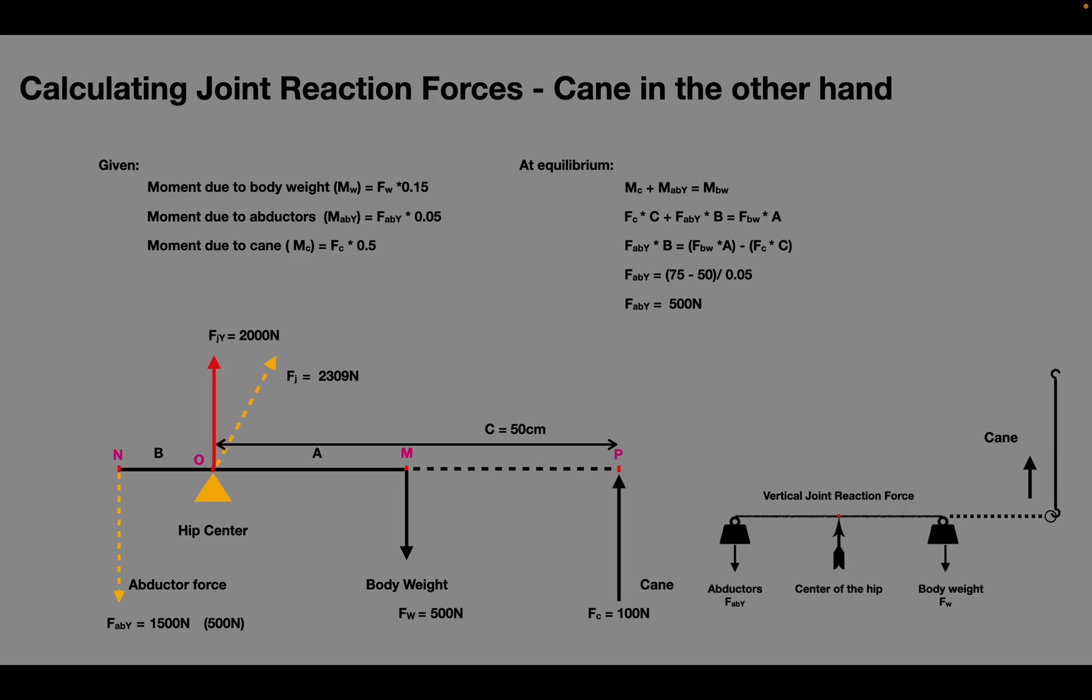Note that the vertical joint reaction force exerted by the body weight and the abductor contraction is opposed by the force exerted through the cane. Therefore, the vertical joint reaction force is force due to abductors plus force due to body weight minus force due to cane, which is 900 N.